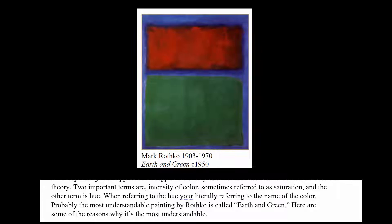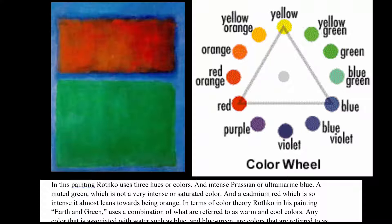The most understandable painting in terms of this is called Earth and Green. He uses three hues: Prussian blue — it might be ultramarine — at its purest intensity; a muted green with some white that makes it almost pastel and grayed out, so it's not a very intense or saturated color; and a Cadmium red that almost leans towards orange and sort of leaps out at you.